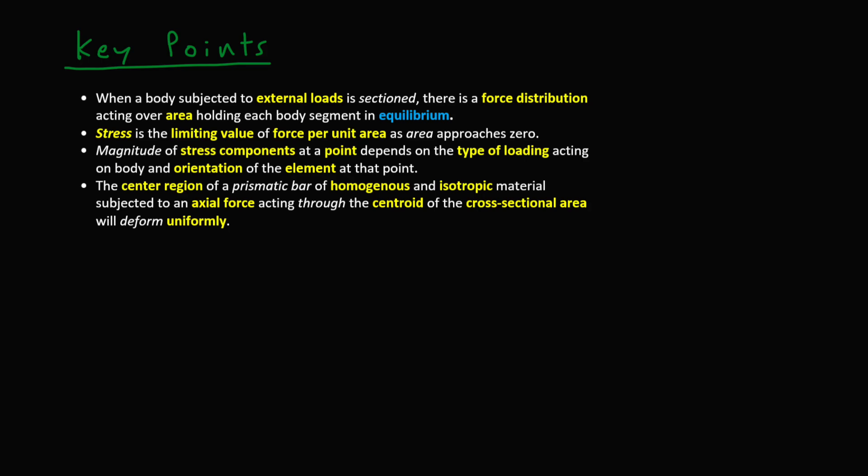And finally the center region of a prismatic bar of homogeneous and isotropic material subjected to an axial force acting through the centroid of the cross-sectional area will deform uniformly. And the normal stress due to the axial force will be uniform or averaged out over the cross-sectional area.